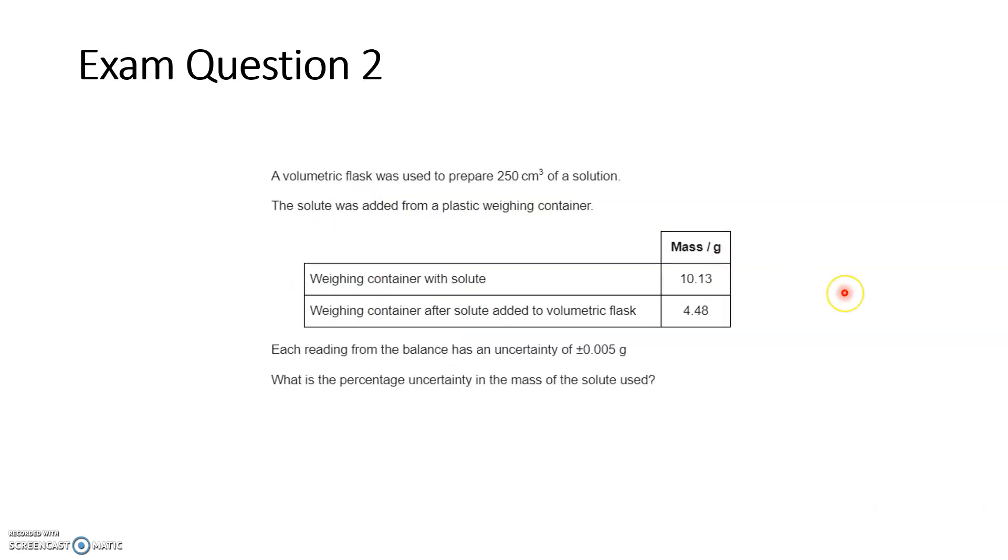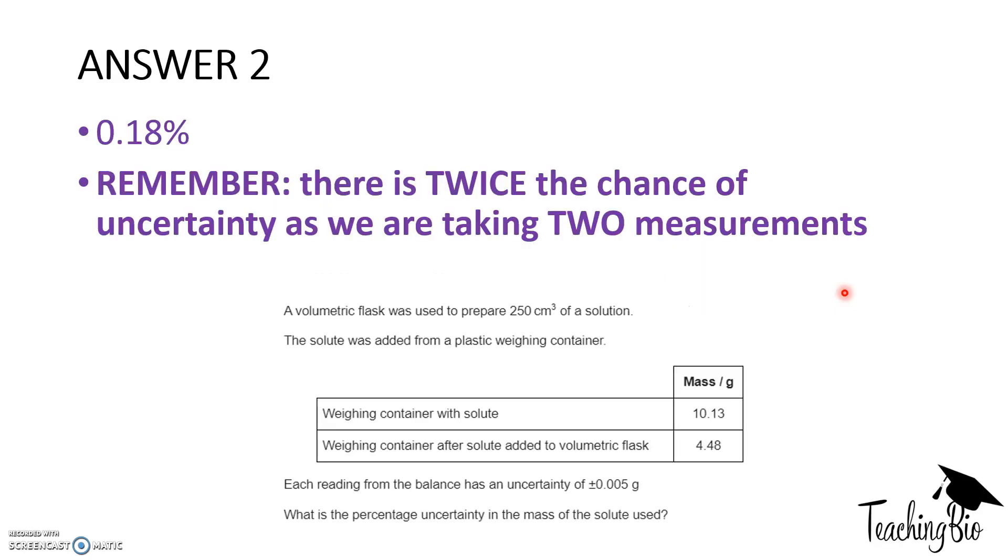Okay, next question. So pause the video and have a go at this question. Okay, and the answer is 0.18. Remember, we're weighing something, right? So we're using a balance. So there will be uncertainty here and uncertainty here. So we have to times 0.005 by 2, and then divide that by the difference in this. So the difference in these two will be the denominator, the true value, and the numerator will be this times 2. Divide them two together, times 100, 0.18%.